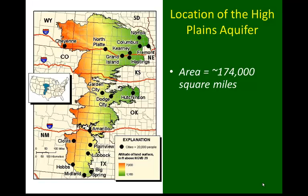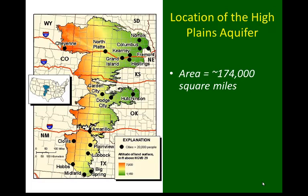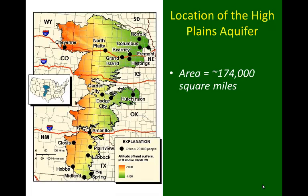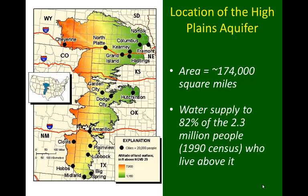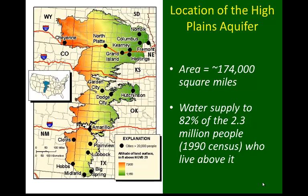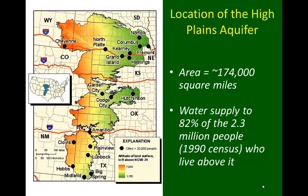The High Plains or Ogallala Aquifer is outlined in the figure on the left here. The area is about 174,000 square miles. Each one of these black dots indicates a city with a population of greater than 20,000 people, showing significant demand for local water resources. In fact, the Ogallala Aquifer provides about 82% of the water used by the 2.3 million people that occupy the lands above the High Plains Aquifer.